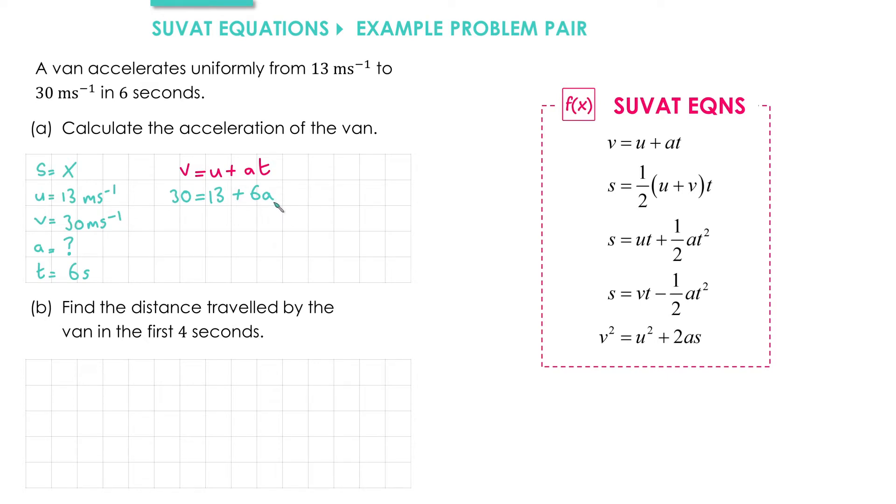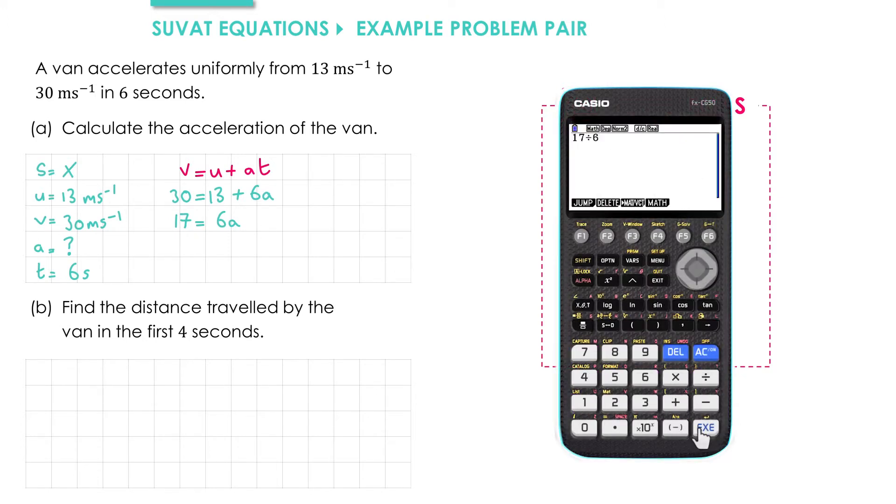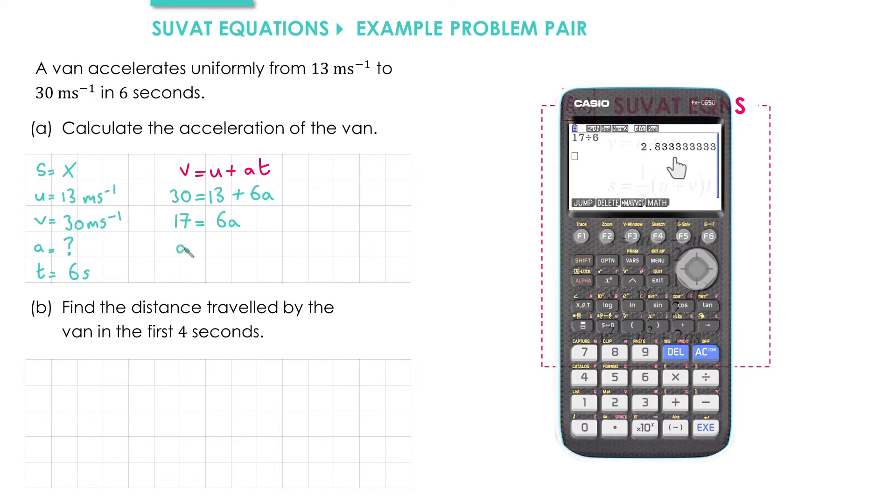To get from this line to the answer, it's up to you how many lines of working out you do. Here, I'm going to subtract 13 from both sides, giving me 17 equals 6A, and then divide through by 6. So into my calculator, I put 17 divided by 6, which gives me 2.83 to three significant figures.